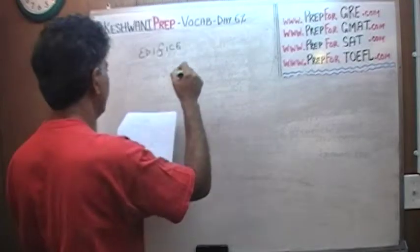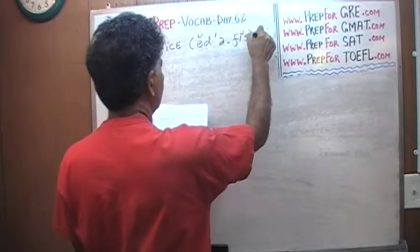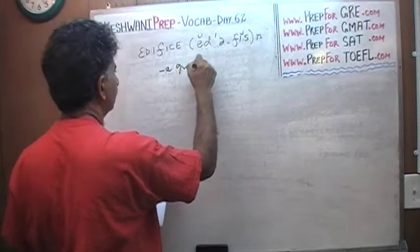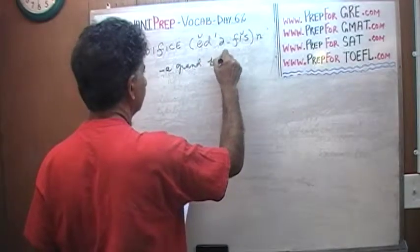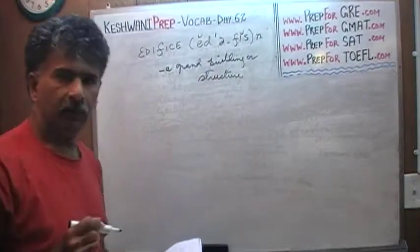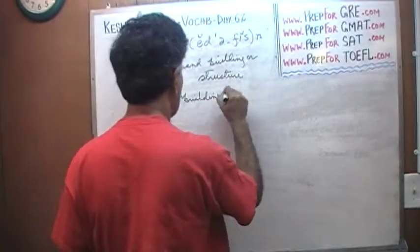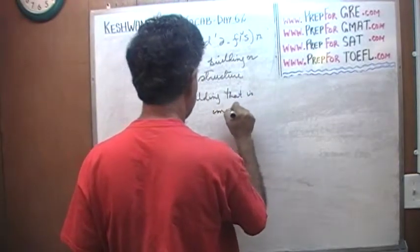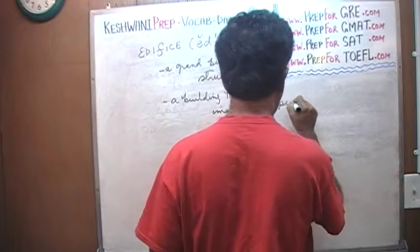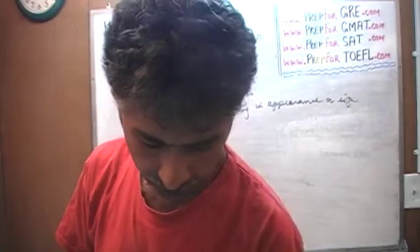The next word that we want to learn today is edifice. What is an edifice? What is an edifice? An edifice is a grand old building. It doesn't necessarily have to be an old building - a grand building or structure. It has to be a very imposing building, a building that is imposing in appearance or size.